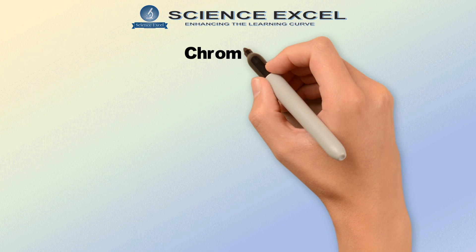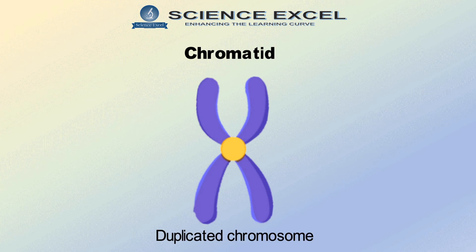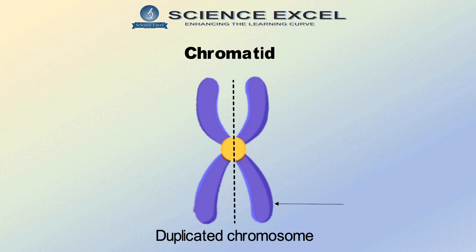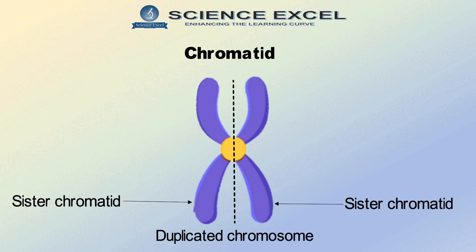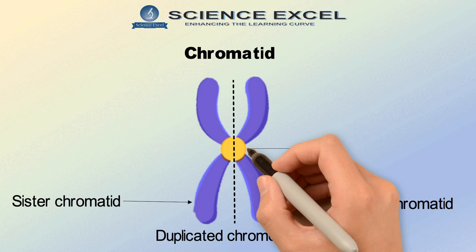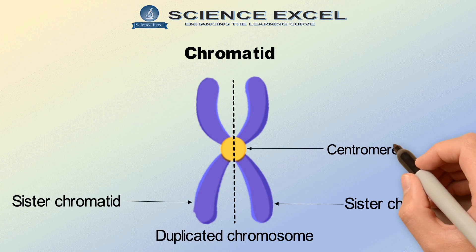Now let's understand what is a chromatid. A duplicated chromosome is double stranded and has the familiar X shape. It appears to be longitudinally divided into two identical parts. Each half of this X shape is a sister chromatid. The two sister chromatids appear to be joined together at a common point called the centromere.